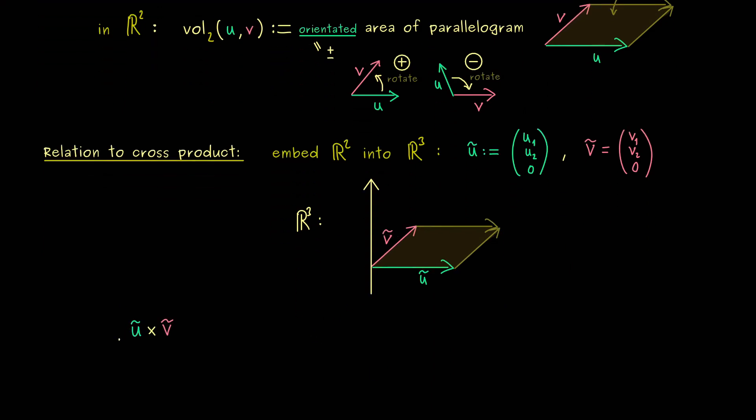In other words, we have to calculate the Euclidean norm of the result u tilde times v tilde. Now at this point you can check out part 10 again if you want to know how to calculate the cross product. Here I just give you the result: it's 0, 0, and then u1 times v2 minus v1 times u2.